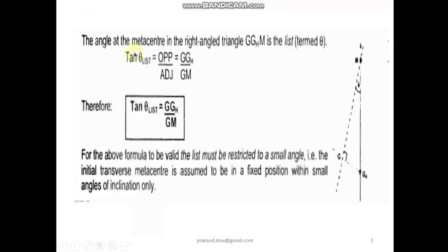Now from this data using a triangle, that is GG_h where M is your metacenter, we can find out what is the angle of list using trigonometry, where theta, this angle here, is your angle of list. Tan theta is GG_h by GM. This will be the formulae. And this formulae is applied for small angle stability. If you already know, small angle stability is where metacenter is assumed to be a fixed point, somewhere between 0 to 9 degree angle of heel. That is the region of small angle stability. So that is where this formulae is going to be used.